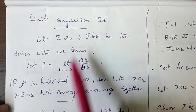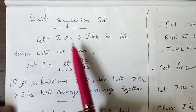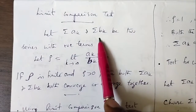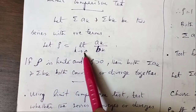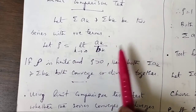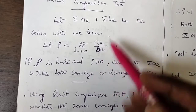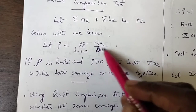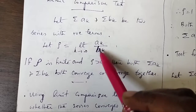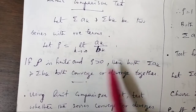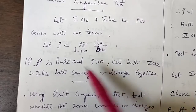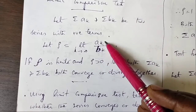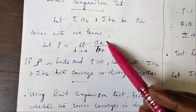Limit Comparison Test: given two series σak and σbk with positive terms, we define ρ as the limit as k tends to infinity of ak divided by bk, where bk is a series we choose. If this limit exists and is finite and positive, then both series converge or diverge together — if bk is convergent, ak also converges; if bk is divergent, ak also diverges.